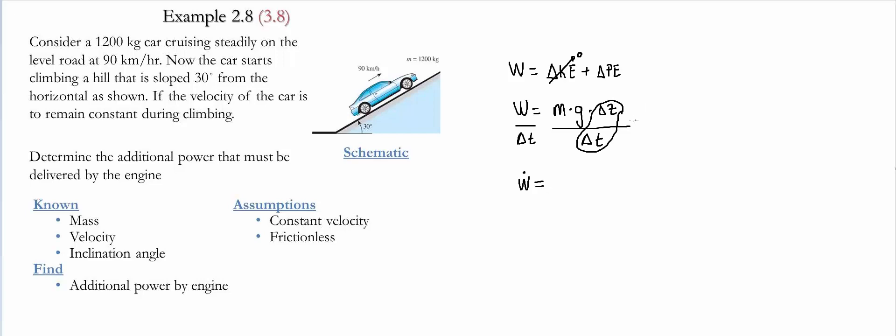So this is going to be basically the velocity that the car is driving at. Therefore this is going to be the mass, gravitational acceleration, and the velocity at which the car is moving.